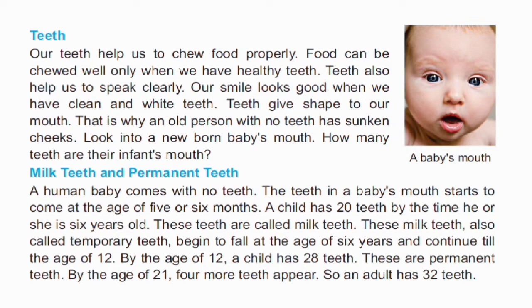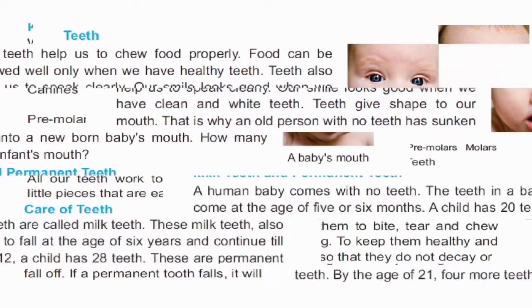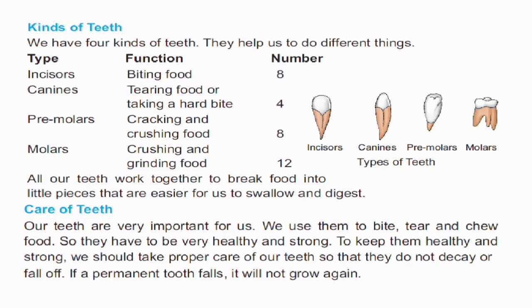By the age of 12, a child has 28 teeth. These are permanent teeth. By the age of 21, 4 more teeth appear, so an adult has 32 teeth.